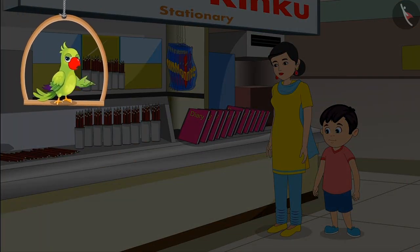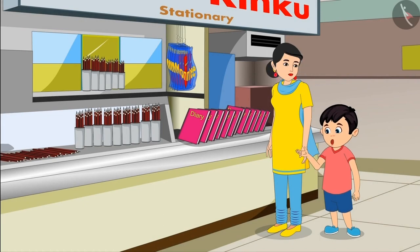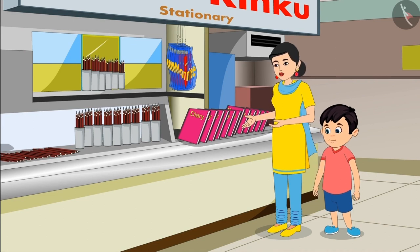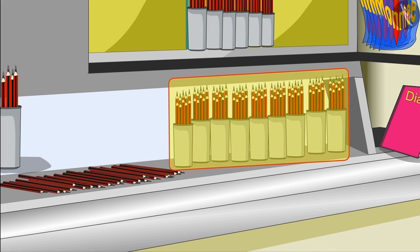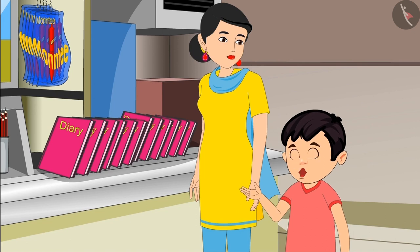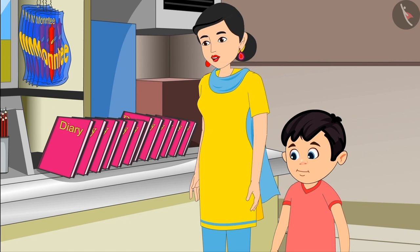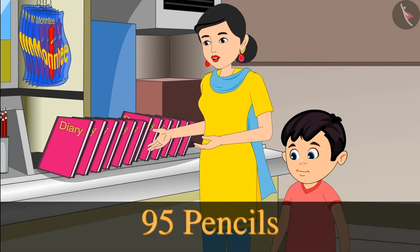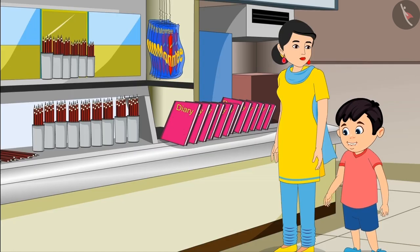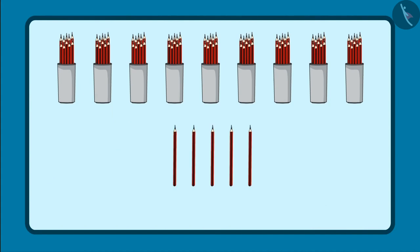Choto has gone to the store with his mother to buy goods. Mummy, why are these pencils placed here in 2 different places? Choto, look, here the pencils are kept in groups of 10 and there are loose pencils here. Okay, but why is this, Mummy? Wait Choto, I'll tell you. First of all, do one thing, give me 95 pencils out of these. Now I understood, Mummy. That means I will give 9 bundles of 10 pencils and 5 loose pencils.